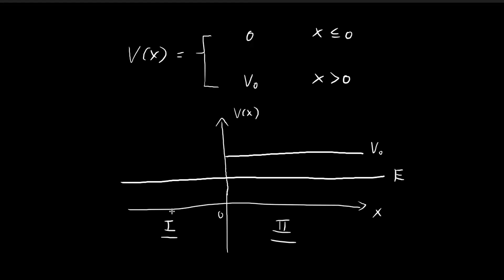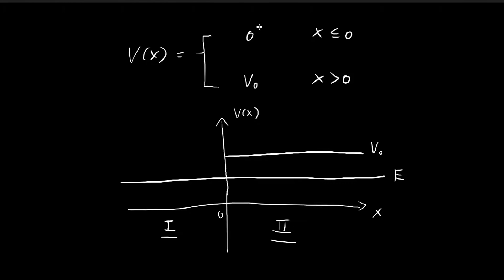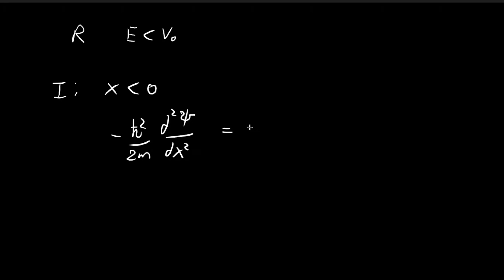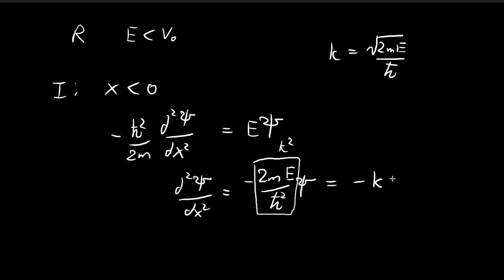Now let's solve the Schrödinger equation for region 1, where x is smaller than 0. We write the time-independent Schrödinger equation. Within region 1 the potential is equal to 0, so the potential term vanishes and we just have E times ψ. Rearranging, we get d²ψ/dx² = −(2mE/ℏ²)ψ. We define k = √(2mE)/ℏ, so this becomes d²ψ/dx² = −k²ψ.